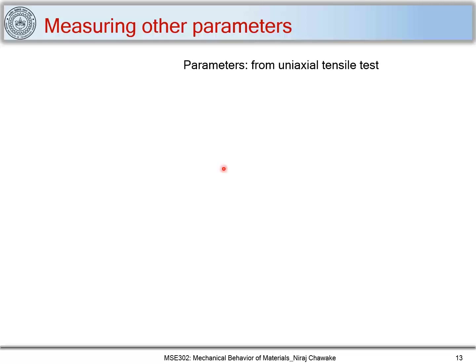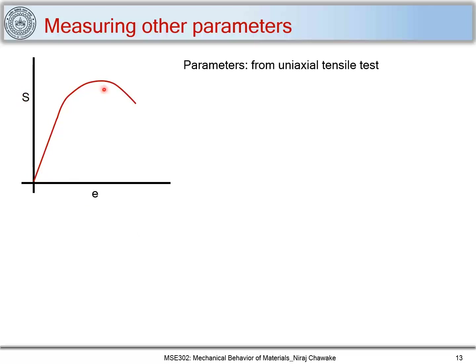We have seen the parameters such as strength and ductility measured from engineering stress and strain. Let's look at some other parameters which we can measure using the uniaxial tensile test. This is an engineering stress-strain curve for a ductile material, where it denotes engineering stress and engineering strain.